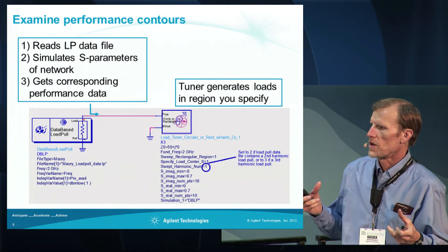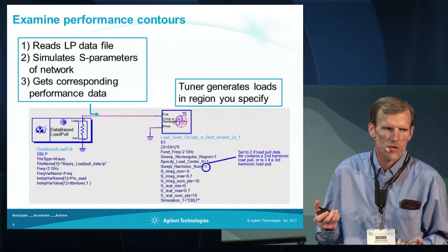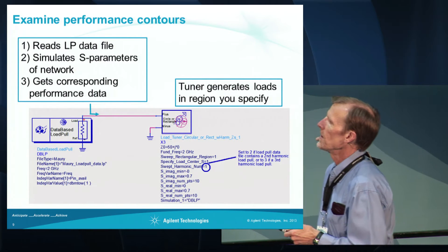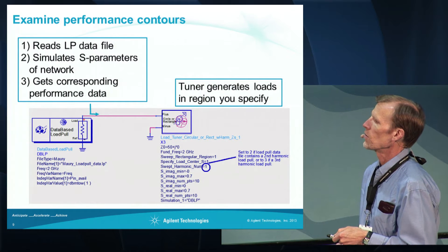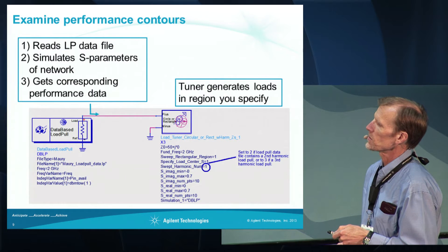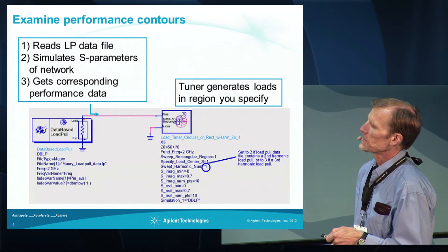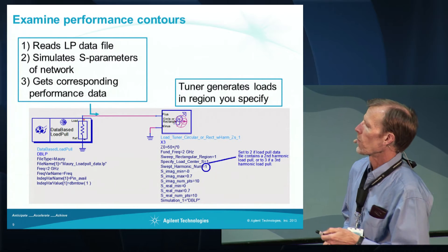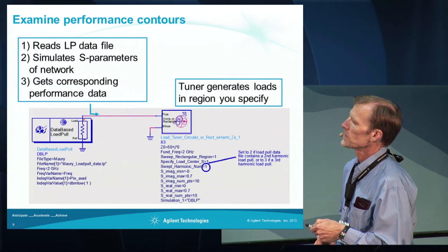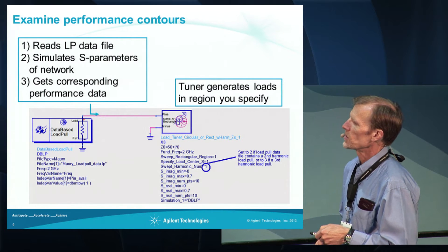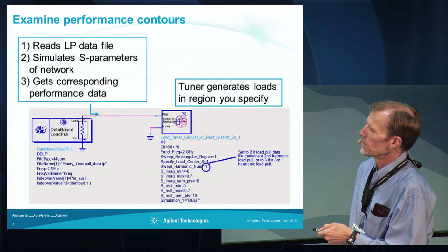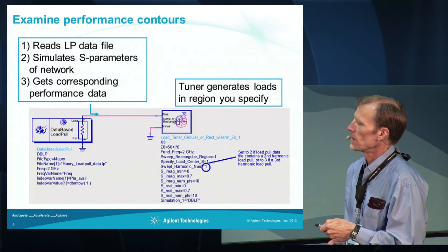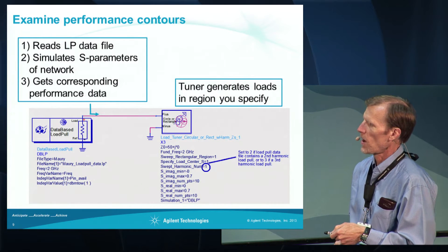If you already know from the vendor what the optimal load is, there's no reason to go through this. But if you want to examine the file and look at contours, you can do that. This component reads in the load-pull data file and simulates the impedance of the reflection coefficient seen by this node, then gets the data that correspond to that reflection coefficient. I have a load-pull tuner where we can specify some region of the Smith chart — in this case a rectangular region — and sweep out that region, present it to this component, and get the corresponding data. You'd want this tuner to specify a region of the Smith chart that corresponds to the data in the file.